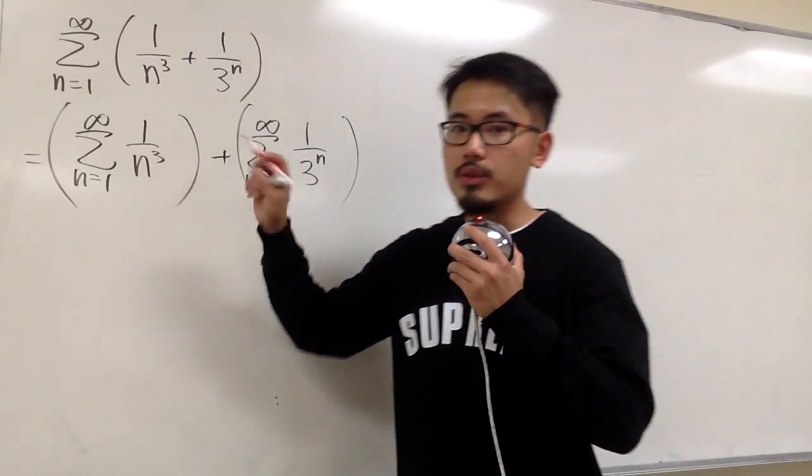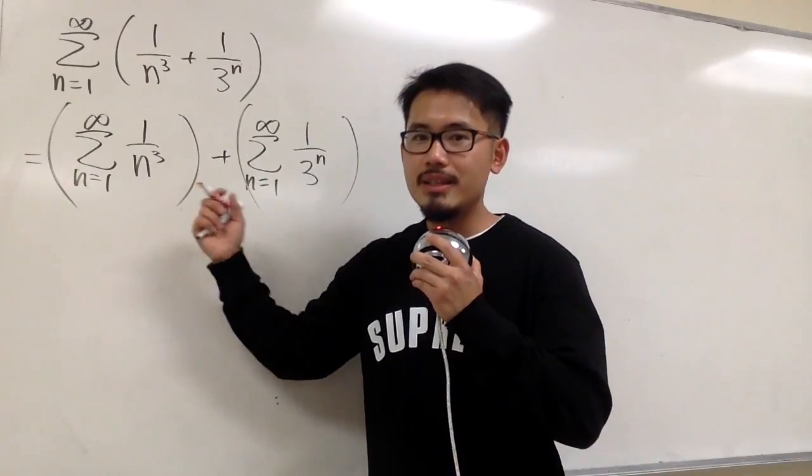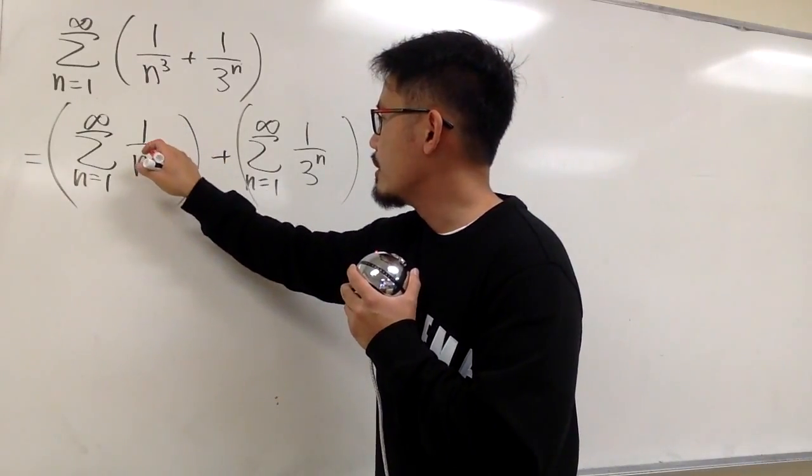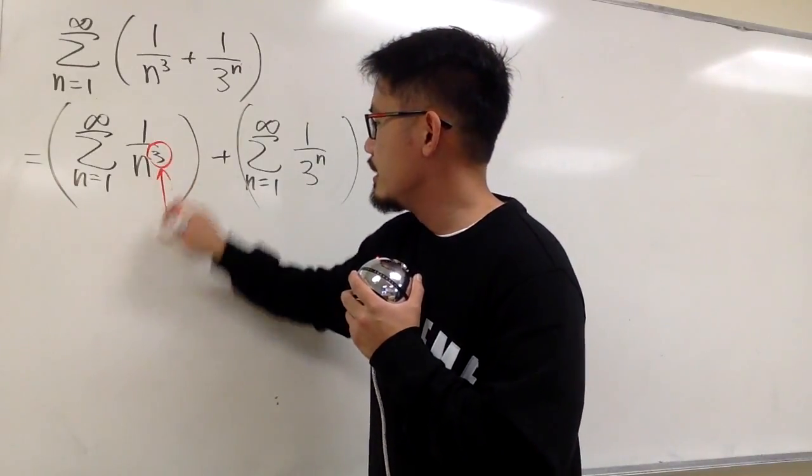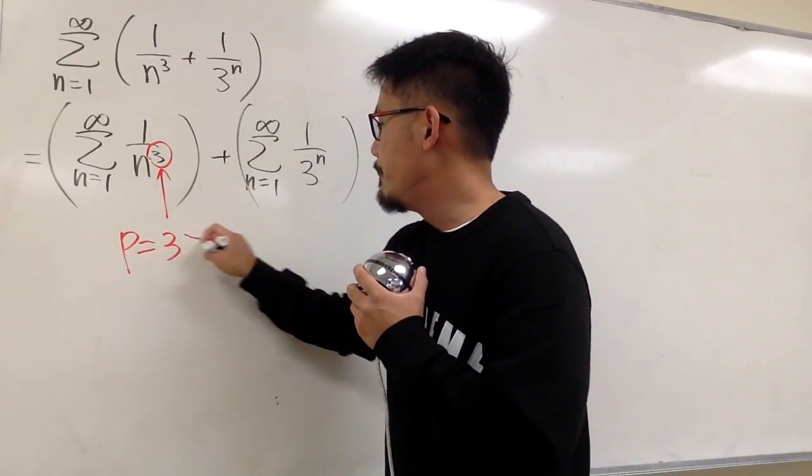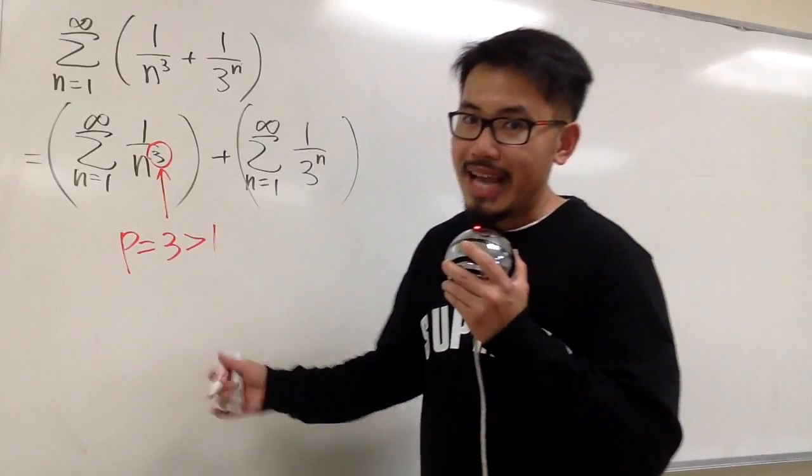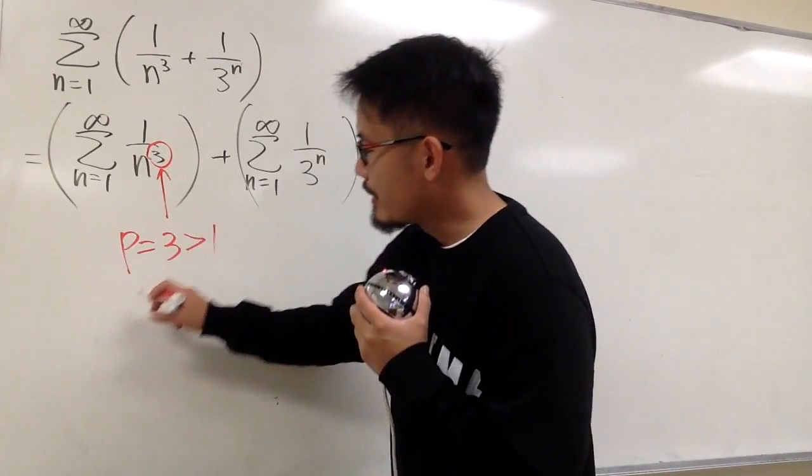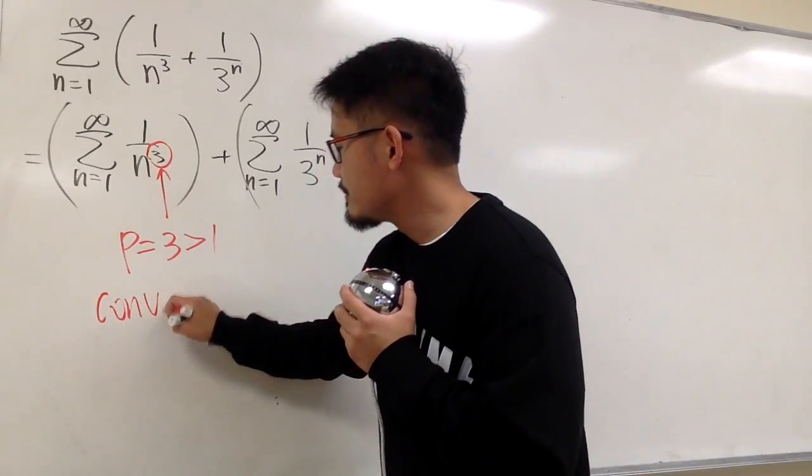Let's talk about this first. Do we know if this converges or not? Yes, we do. This is 1 over n to the 3rd power, so you know this right here, it's a p-series. p is 3, and we know 3 is bigger than 1. When we have p bigger than 1, by the p-series test, we know this converges.